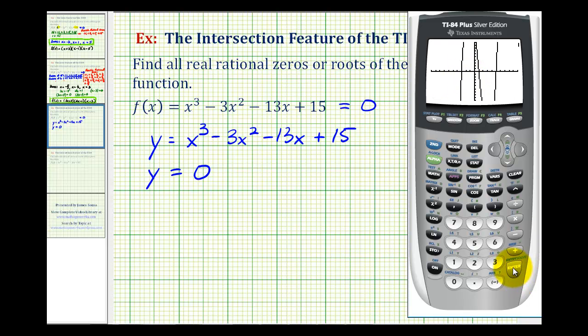Now all we have to do is press enter three times. Enter, enter, enter. Notice how it's telling us when x equals negative three, y is equal to zero. So negative three is a zero of our function.